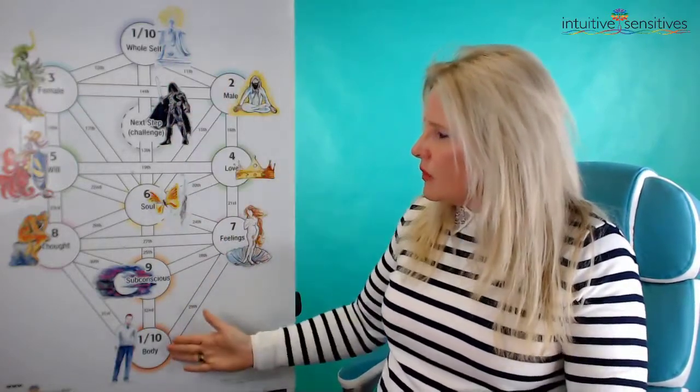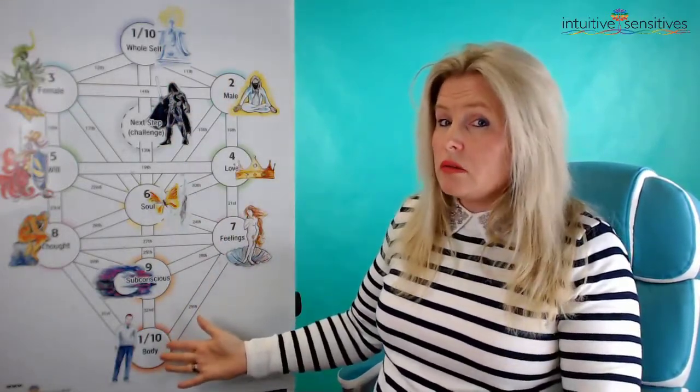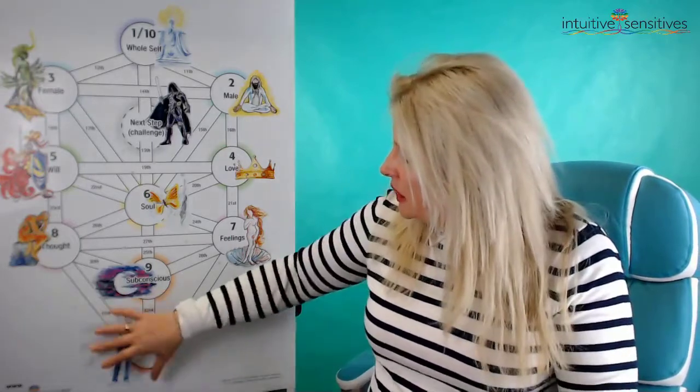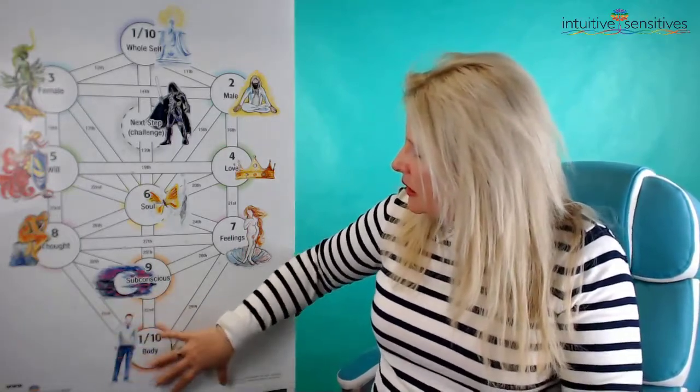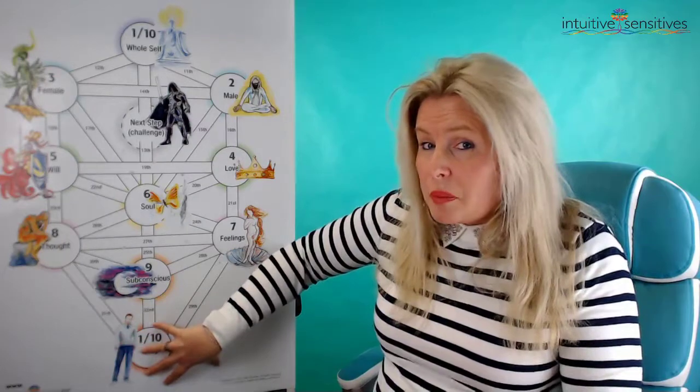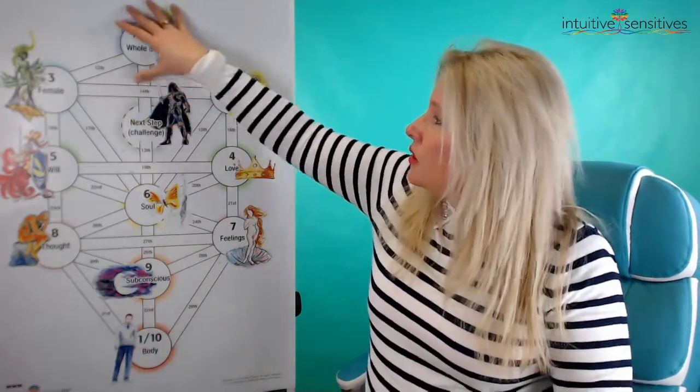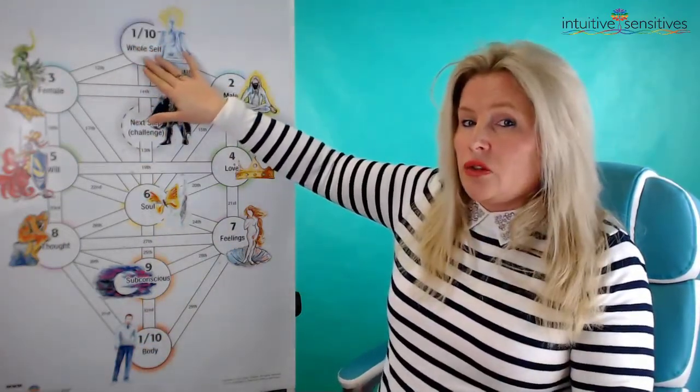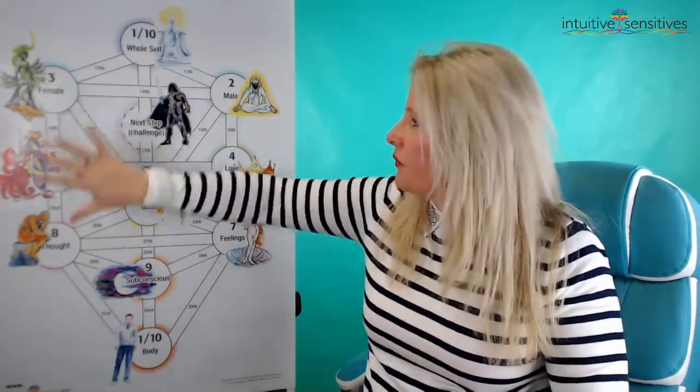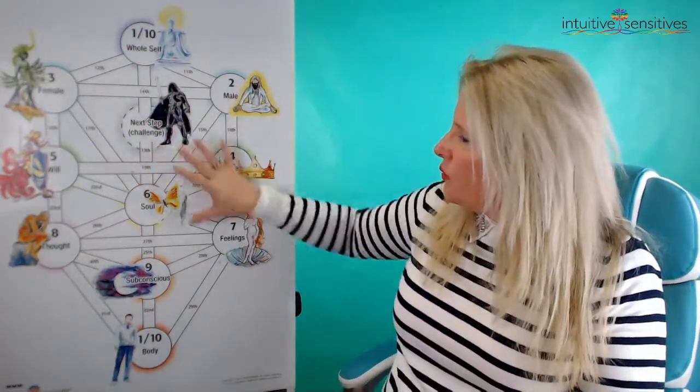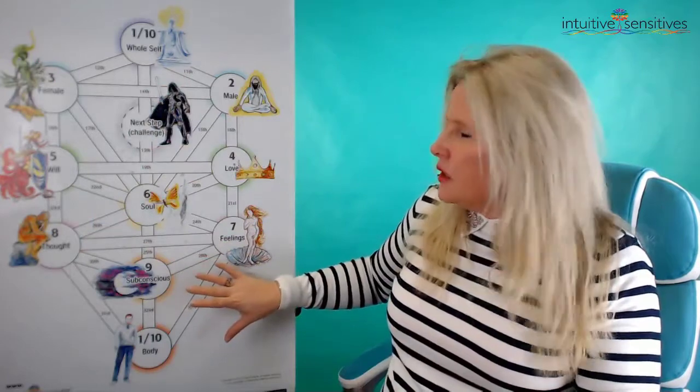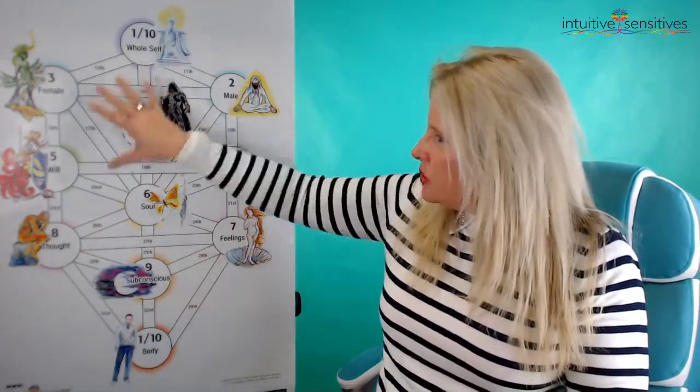If you can imagine that the chakra system relates to the Tree of Life as well, and imagine that this you in the body is the base and you as the whole self is this 1/10 here at the top. So the whole self is having a full perspective of everything.